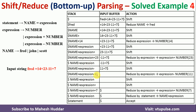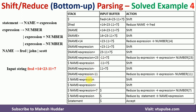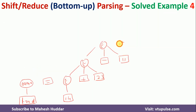After that, minus and 11 were shifted, and expression minus 11 were all three reduced to expression. Then plus and 7 were shifted; expression plus 7 were all three reduced to expression. Both plus and 7 are terminal symbols.